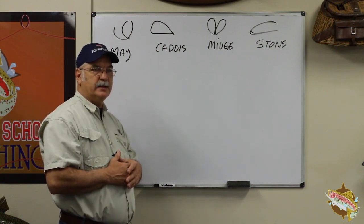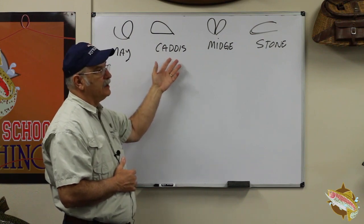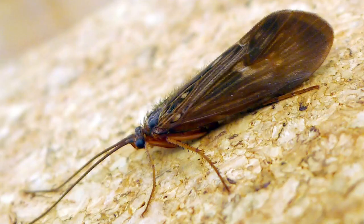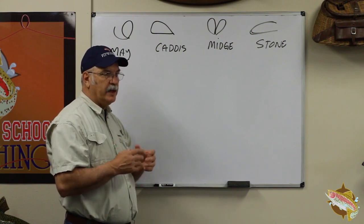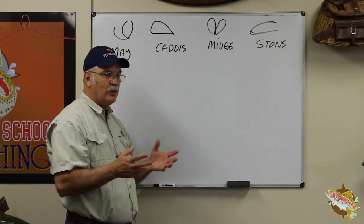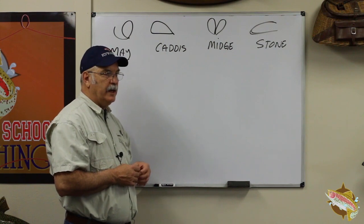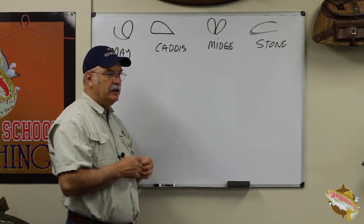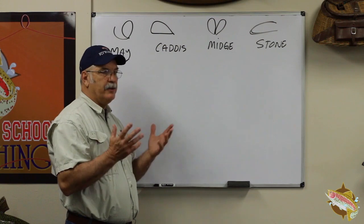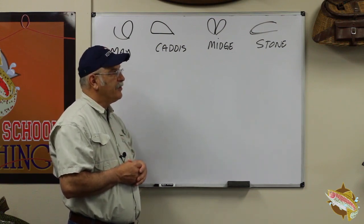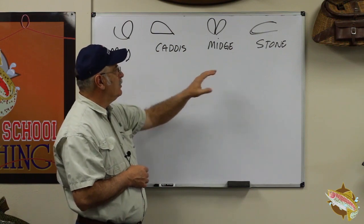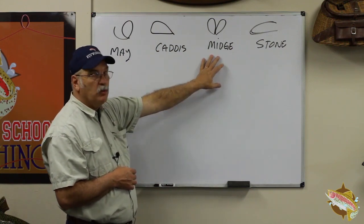Caddisflies are pretty important and really easy to identify because they look like a moth. A caddisfly is kind of like an underwater moth — when they emerge, they crawl out from the water and they've got their moth look and off they go. The midge is a little different from a caddis and a mayfly — a midge has a split wing and it looks an awful lot like a mosquito.